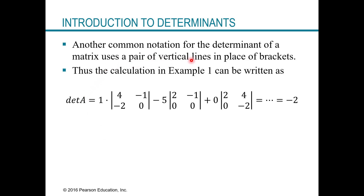Another common notation for the determinant is to use vertical lines in place of brackets. So instead of writing 'det' with brackets, you write vertical lines around the matrix. This is saying one times the determinant of this two by two, minus five times the determinant of this two by two, and so on.